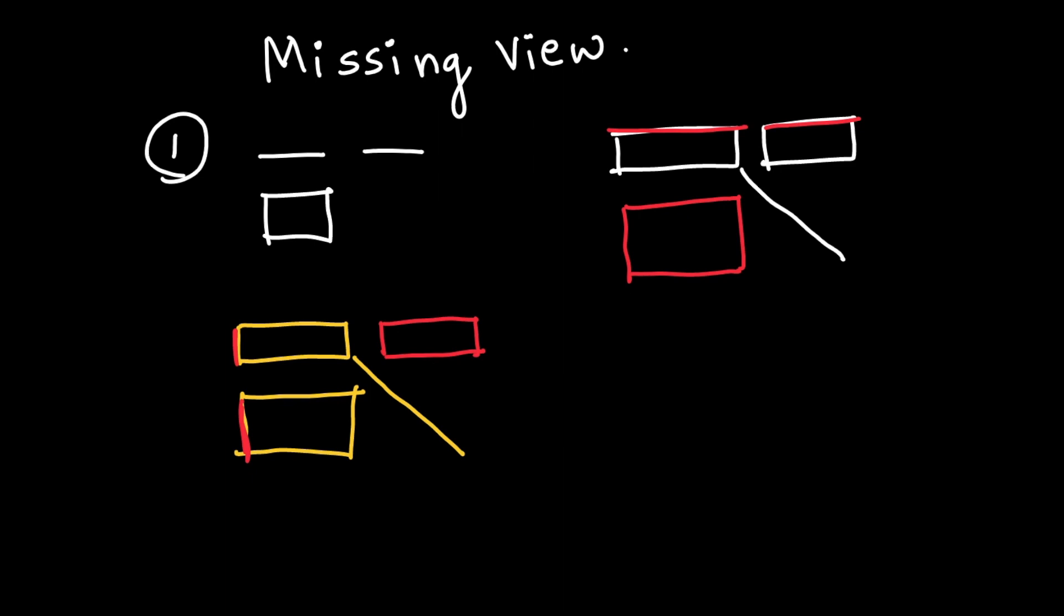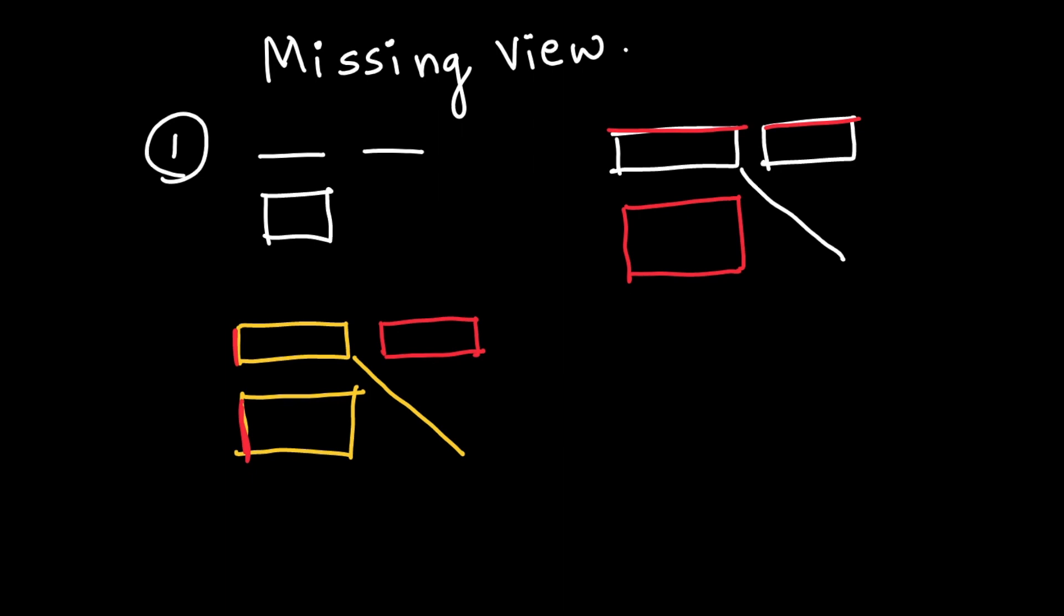Now second one: incline in one view, other two views will be same. If object is inclined, then the other two views will be same. See this sum? If you see in this sum, we can apply that concept line-line-rectangle first. See this? Line-line, right? You'll get rectangle.